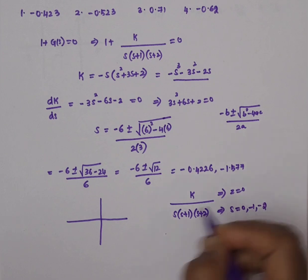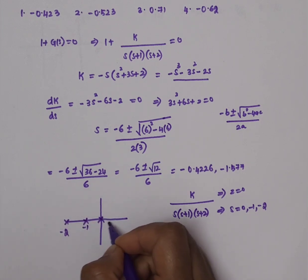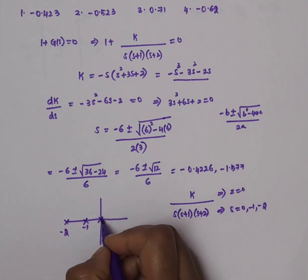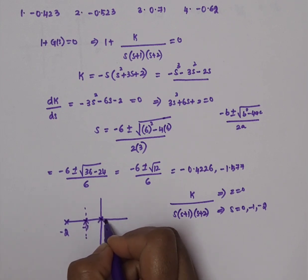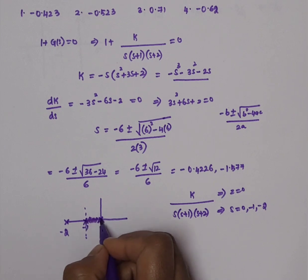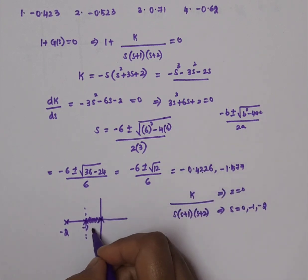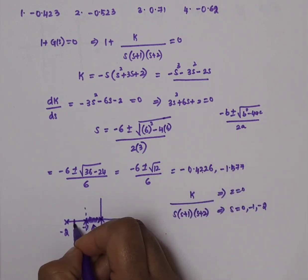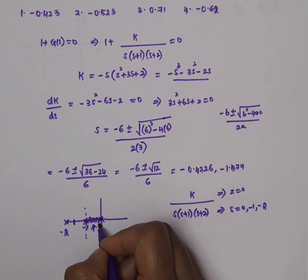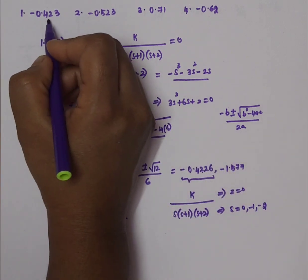Sketching the root locus: the poles are at s = 0, s = -1, and s = -2, with no zeros. We check which root lies on the root locus. The root s = -1.577 lies between poles -1 and -2, so the valid break away point is s = -0.4226. This is the correct answer — choose the first option.